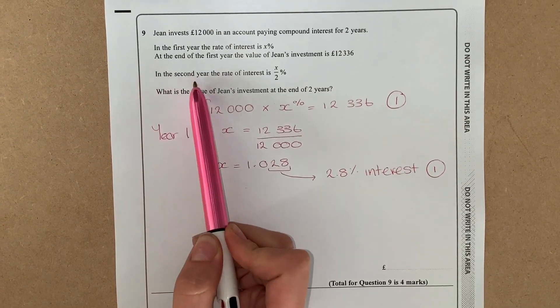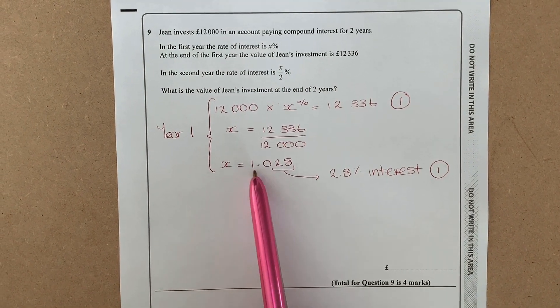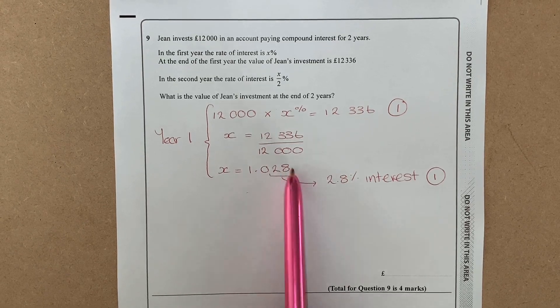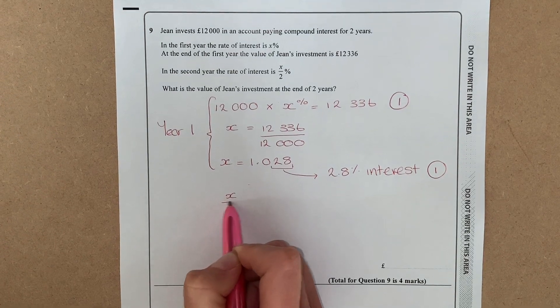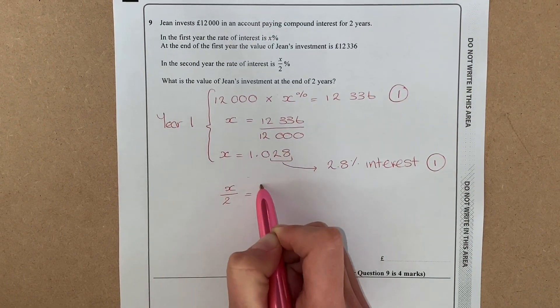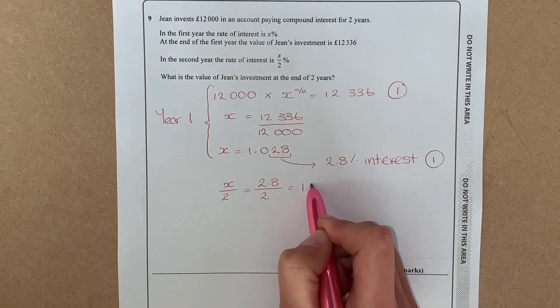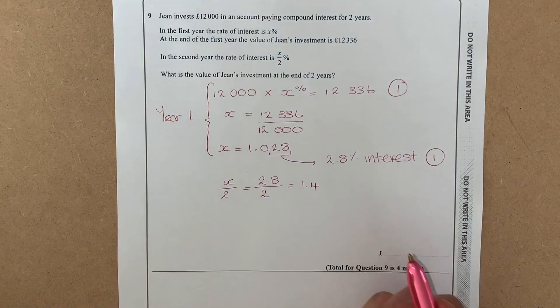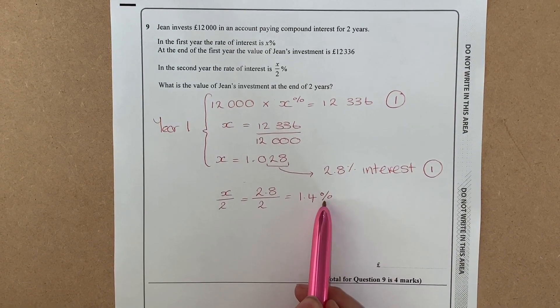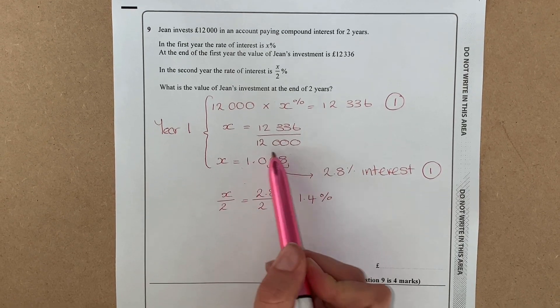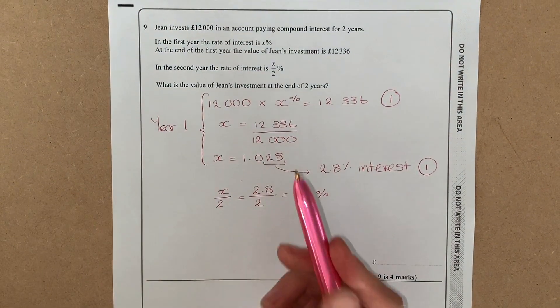So now we can move on to the rest of the question. In the second year the rate of interest is x/2. Now I know we worked x out to be 1.028 as a multiplier, but the interest was 2.8%, so don't forget that x/2 is actually going to stand for 2.8 divided by 2, which gave us 1.4. So the interest rate for the second year was 1.4 percent. A common mistake just to clarify would be that people divide this number by 2, but actually we just wanted to half the interest.